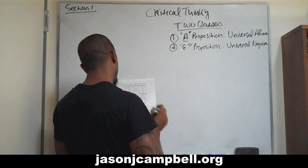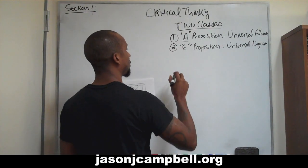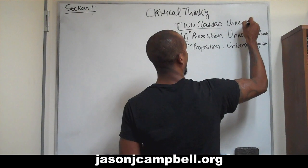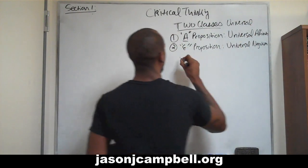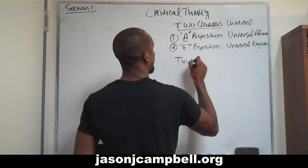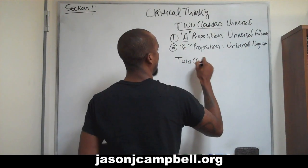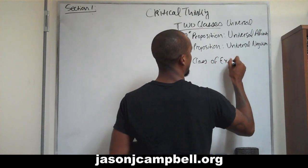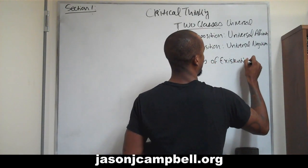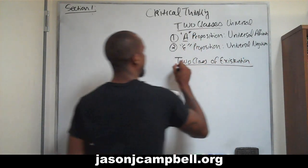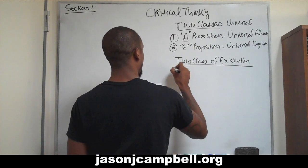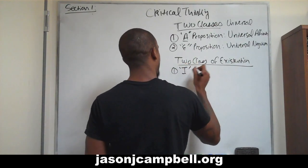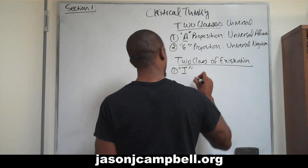Then we have two classes of existential propositions. Now we have two classes — just commit this to memory. The first are what are known as I propositions.